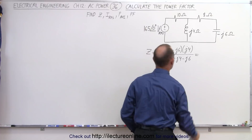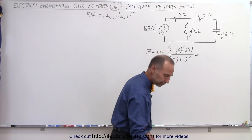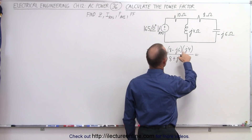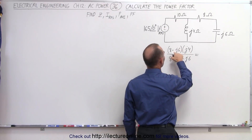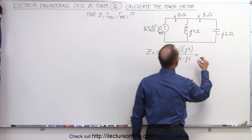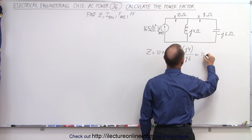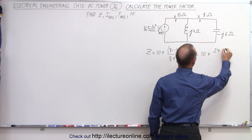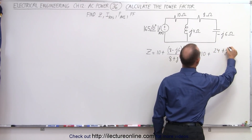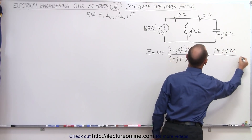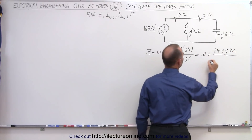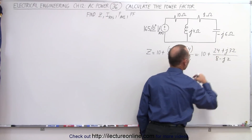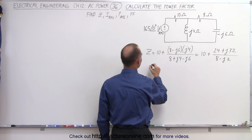j times j is negative, and negative times negative is positive, so we get positive 24. That gives us 10 plus 24 + j32, all divided by 8 − j2. Now we can put those into magnitude and phase angle format.